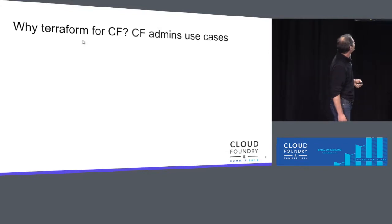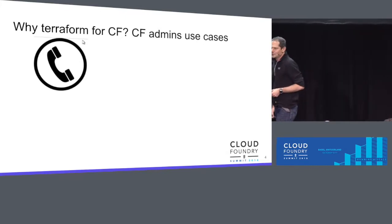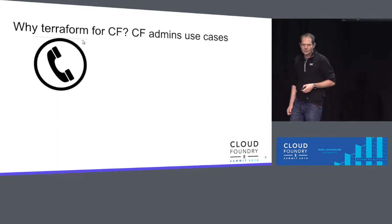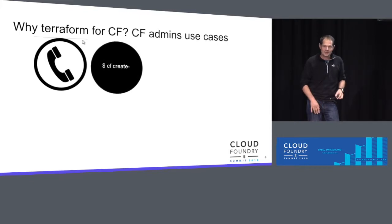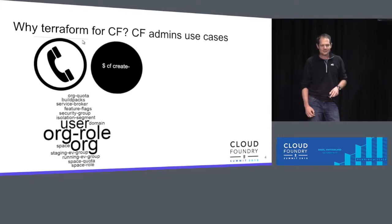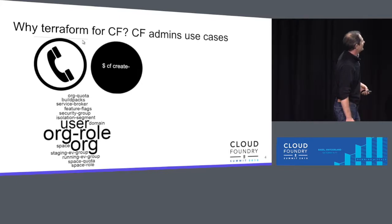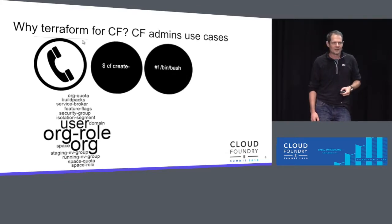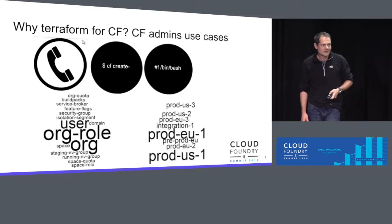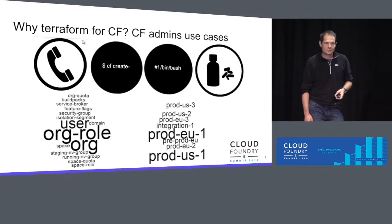Let's get started with the why — the admin use case. As an admin, my life looks pretty much like this: I get requests from users to create a space, an org, a security group, publish a buildpack, and so forth. I go off with the CLI and create. But it becomes overwhelming with the number of requests — feature flags, isolation segments, EV groups, quotas, and all that. So as a developer, I start scripting. But then come more requests and more consistency requirements to run them in sync between pre-prod, prod, and different regions. Very soon it becomes a headache, so there needs to be a better way.